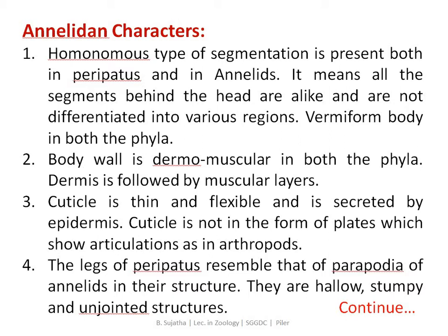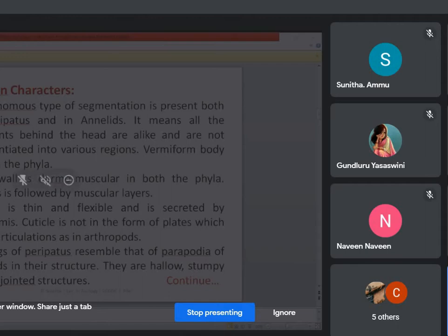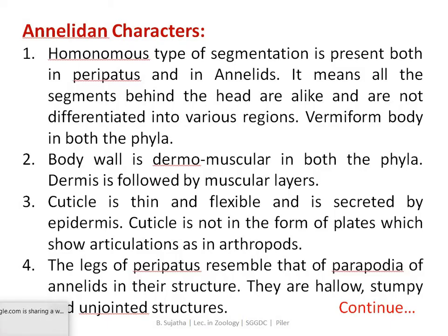The first annelid character: homonome type of segmentation is present in Peripatus. This segmentation is not differentiated into various regions — the whole body shows uniform segmentation throughout, similar to annelids. The body is also worm-like in form.